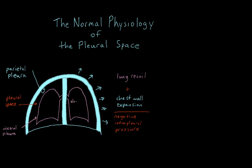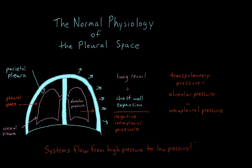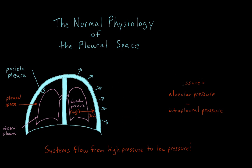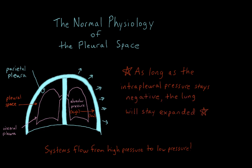Another important quantity is the alveolar pressure — the pressure within the alveoli of the pulmonary parenchyma. The alveolar pressure may be negative during inspiration or positive during expiration, but under normal physiologic conditions, it is always relatively positive compared to the negative intrapleural pressure. The pressure gradient across the alveolar pressure and the intrapleural pressure is known as the transpulmonary pressure. By convention, it is represented mathematically as the difference between alveolar pressure and intrapleural pressure. Under normal physiologic conditions, the transpulmonary pressure gradient between the relatively high alveolar pressure and the relatively low intrapleural pressure tends to force the lungs outwards in expansion towards the chest wall. This force directly counteracts the collapsing recoil force of pulmonary parenchyma and keeps the lungs fully expanded against the chest wall. The bottom line is that as long as the intrapleural pressure remains negative, the lung will stay expanded.